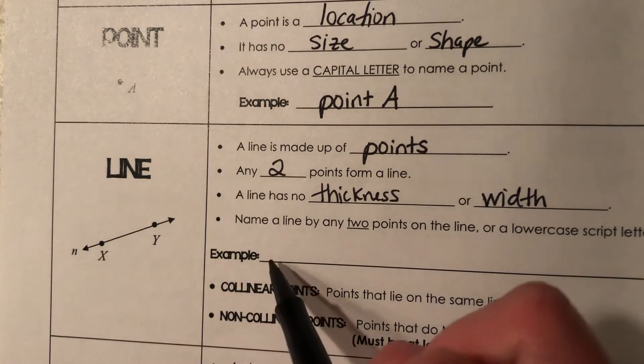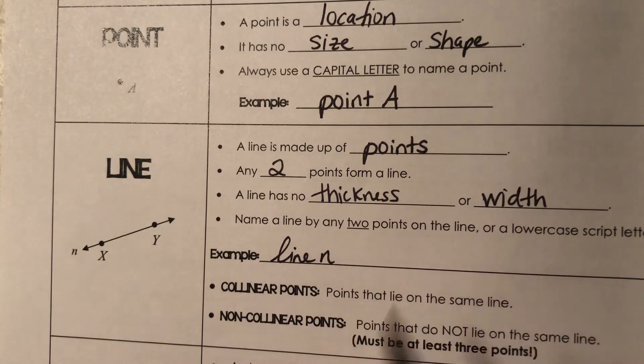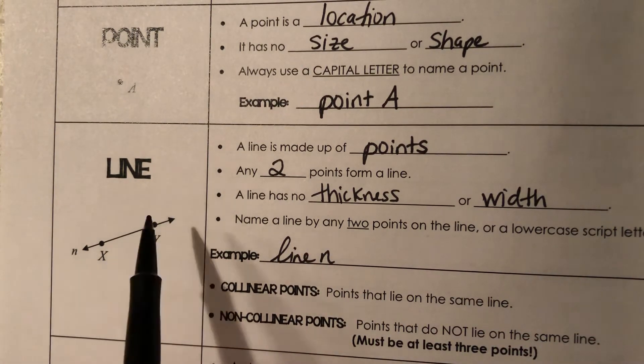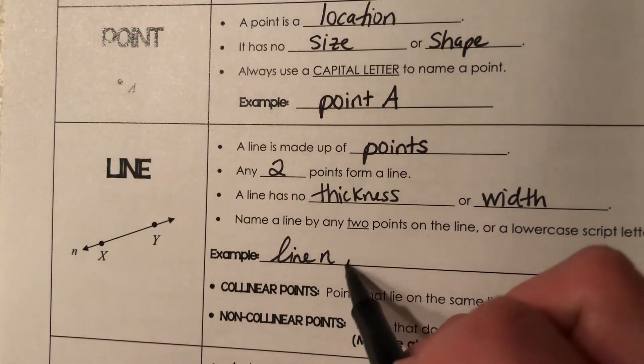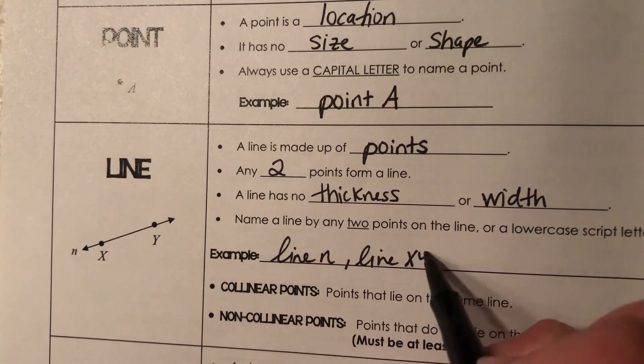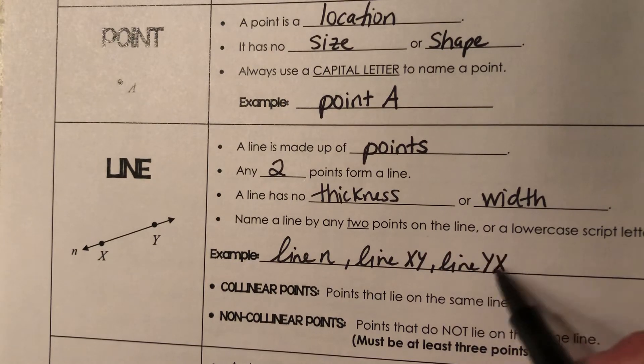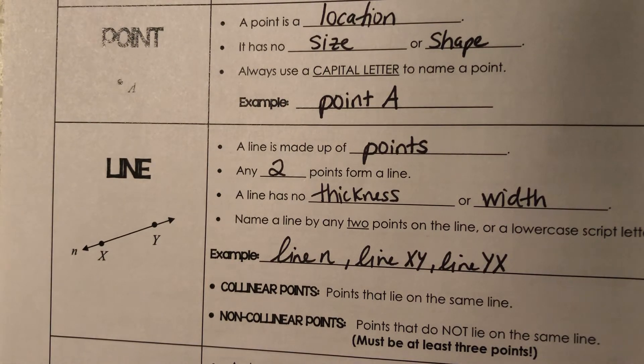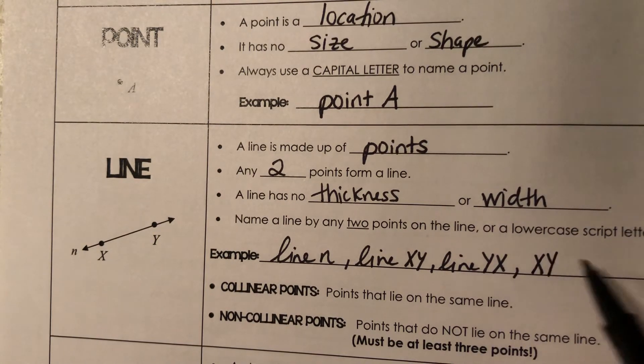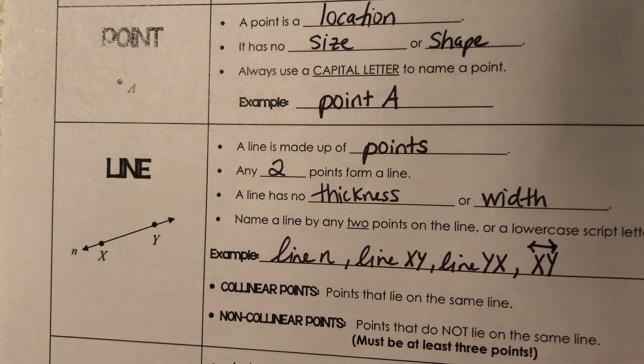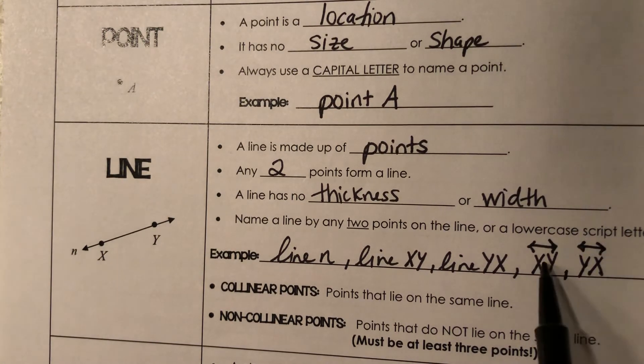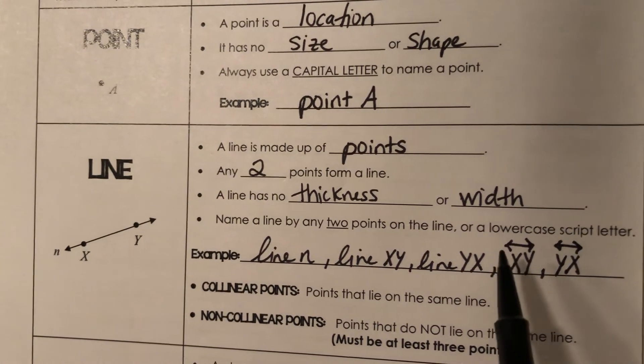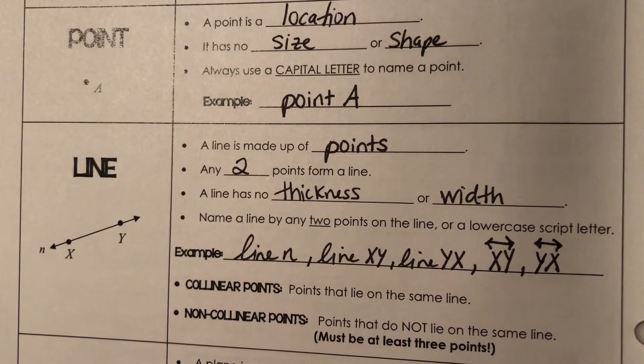So you could call this line N. So if you ever see the little script letter, that's the name of the line that it's beside, or you can use the actual points that they gave you for the line. So you could call it line X Y, or you could say line Y X. It doesn't actually matter which order you do that. Or if you don't want to actually write the word line, you can use a symbol and you can say X Y and then draw a little line with arrows above it. Or you can go the other way Y X and do it this way. The key thing is you need to have the arrows to show that it's a line because lines keep going in both directions forever.